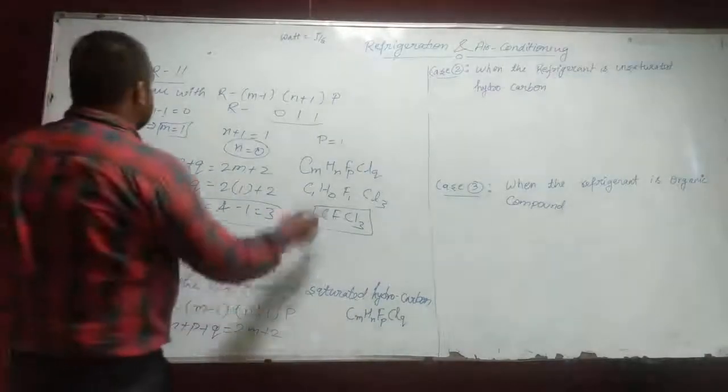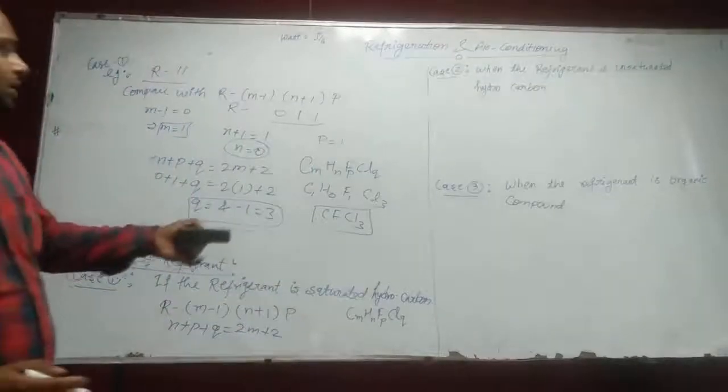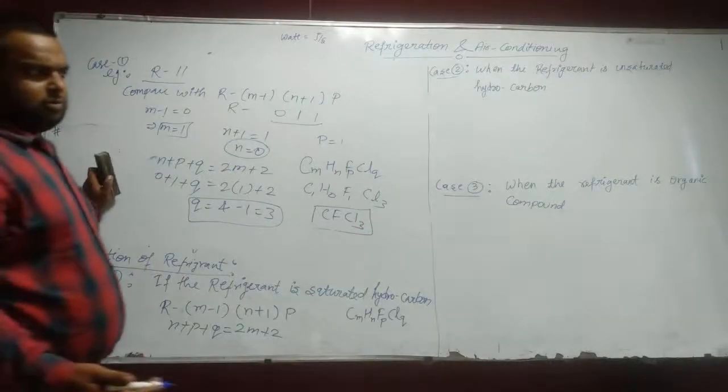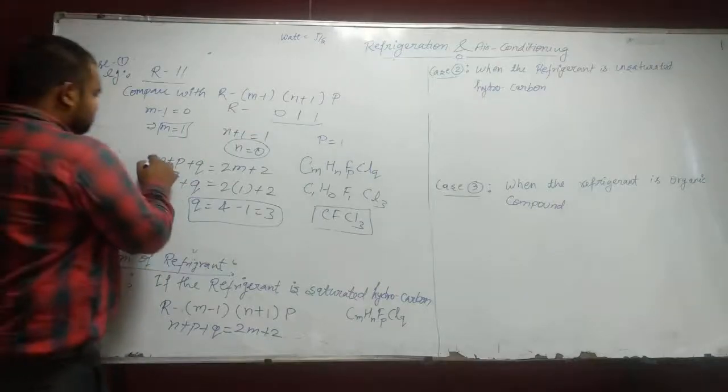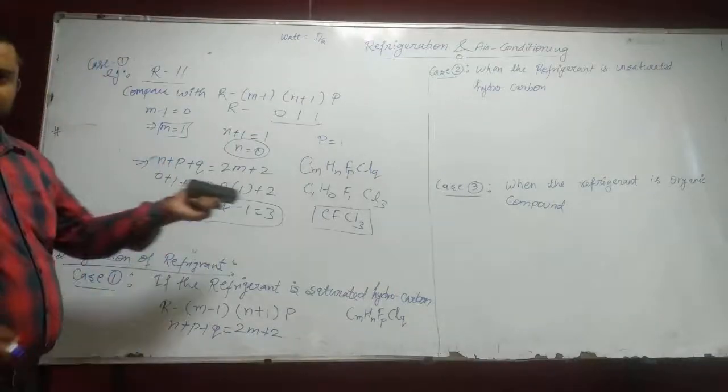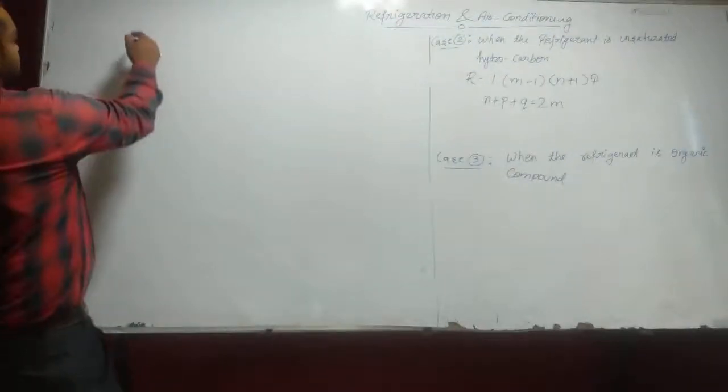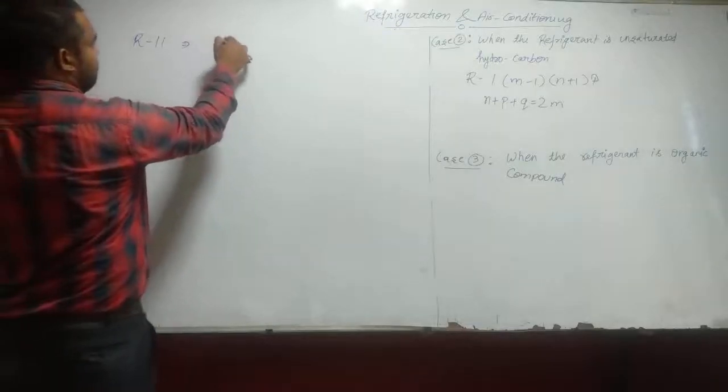This compound is the refrigerant. We designate R11 to CFCl3. The chemical formula of R11 is CFCl3. If we practice one or more than one question, then we can easily understand. We can directly answer the same question. R11 comes to CFCl3.